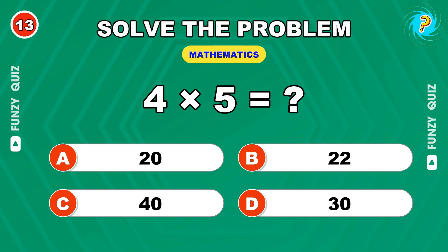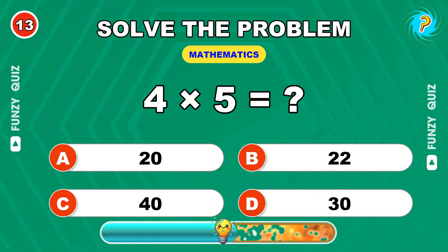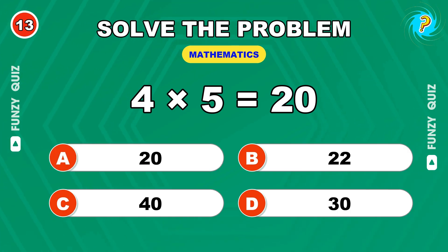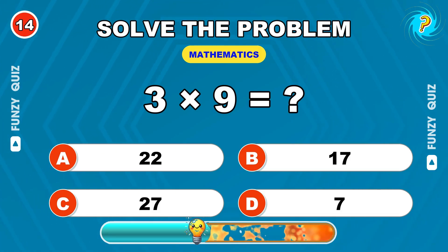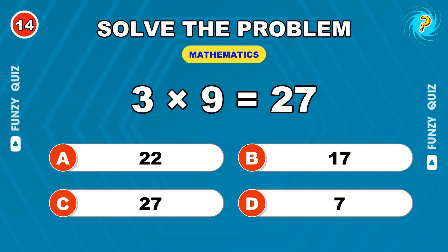What about 4 times 5? 20. Getting tougher now. 3 times 9? 27.